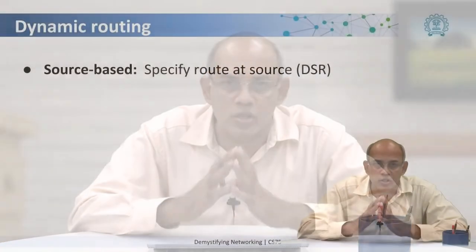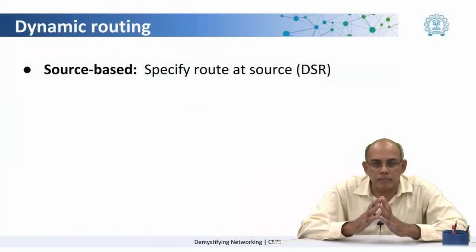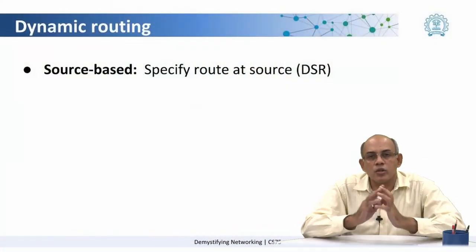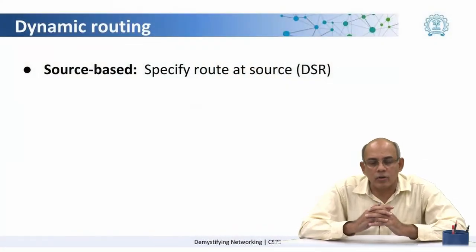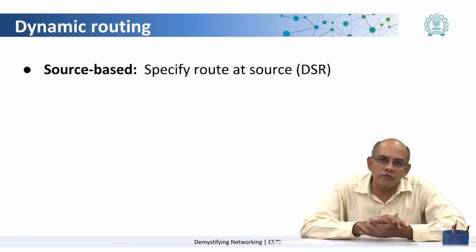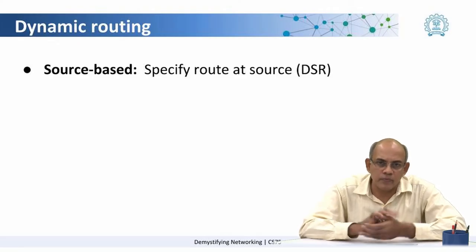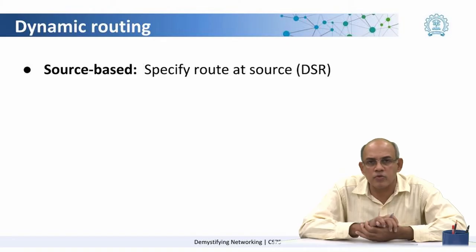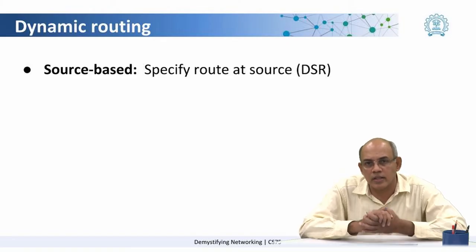If we look at it a little more in detail, there are actually three types of routing mechanisms that are possible. One mechanism is called source-based routing, wherein the entire route is specified at the source itself. There are some algorithms which work in this manner, such as dynamic source routing or DSR.